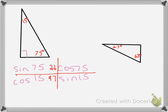If our pattern holds true, the sine of 75° should equal the cosine of 15°. Using the calculator, sine of 75° gives us 0.97 — so they are equal. And cosine of 75° is 0.26, while sine of 15° is also 0.26. The pattern holds.